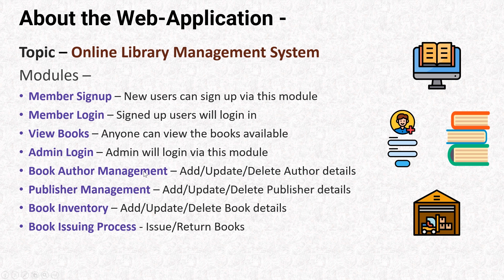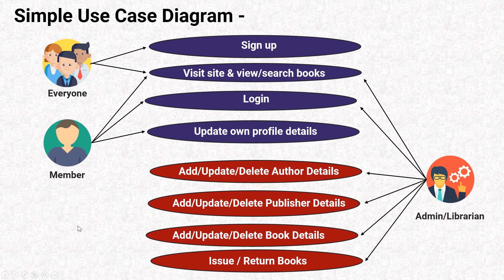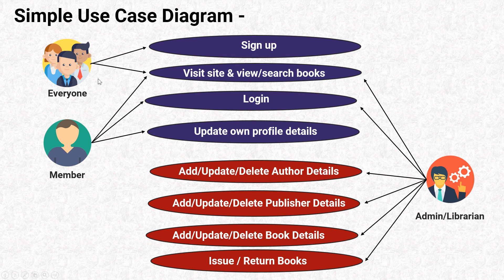To give you a visual representation, here's a simple use case diagram. There are three different types of users: 'Everyone' is someone who's not signed in — just a random visitor. A 'Member' is someone who signs up. The third is Admin/Librarian — for simplicity I've kept them the same, though they can be separate. Everyone can sign up on the website and search books.